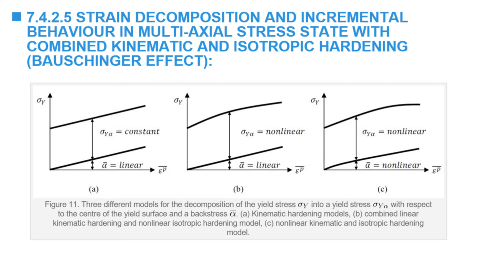The material model requires identification of two curves. The first curve defines the equation of alpha, or the back stress. The other equation defines the value of sigma yield alpha, which gives the distance between the back stress and the yield stress. These curves could be linear or nonlinear as a function of the equivalent plastic strain. In this video, we will present the Armstrong-Frederick nonlinear law to describe alpha. Any other law can be used for sigma yield alpha.